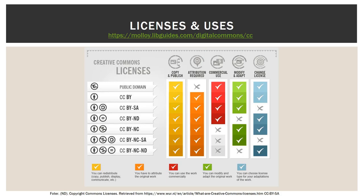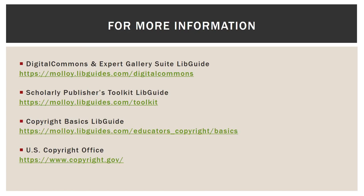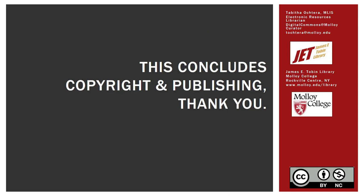For more information or to see those charts again, visit the molloy.libguides.com Digital Commons and Expert Gallery Suite LibGuide. You can also find more information on the Scholarly Publishers Toolkit LibGuide. To revisit copyright, visit the Copyright Basics LibGuide or the U.S. Copyright Office's website directly. This concludes Copyright and Publishing Part 2, Open Access. You can see at the bottom right I have labeled this presentation with a BY NC license. Thank you.